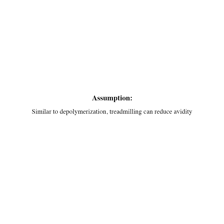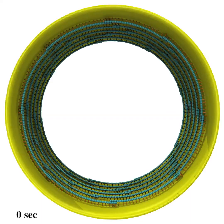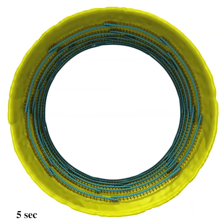Recent findings show that FtsZ filaments treadmill around the cell. We therefore tested whether treadmilling can play a role similar to depolymerization in reducing avidity and sustaining filament sliding. Our simulation shows that treadmilling can also enable ring constriction.